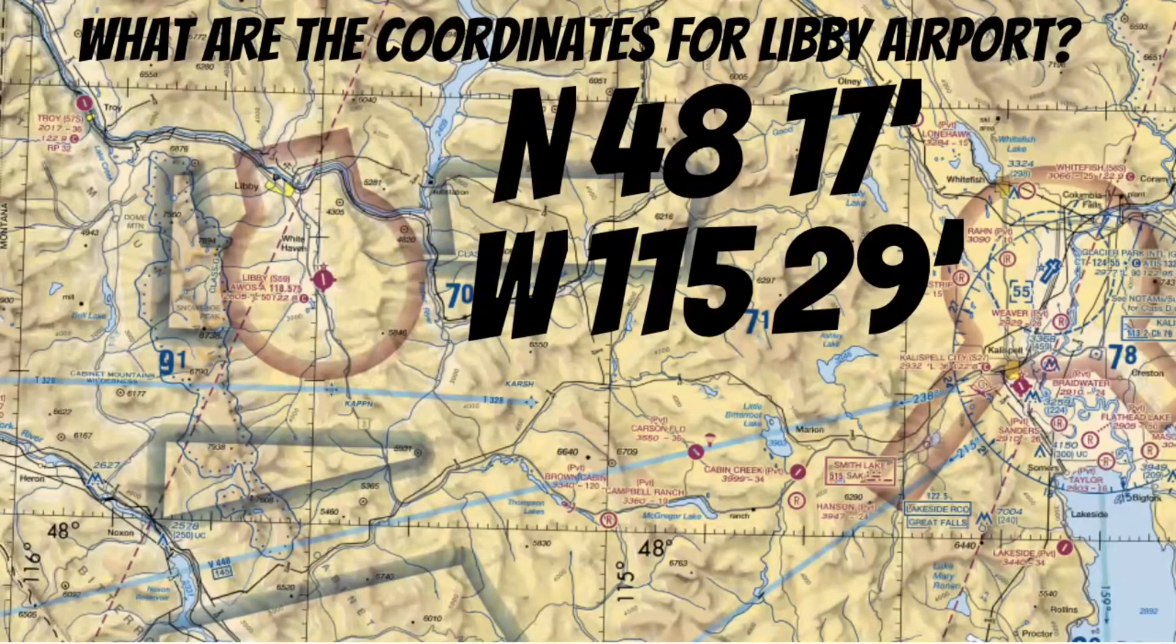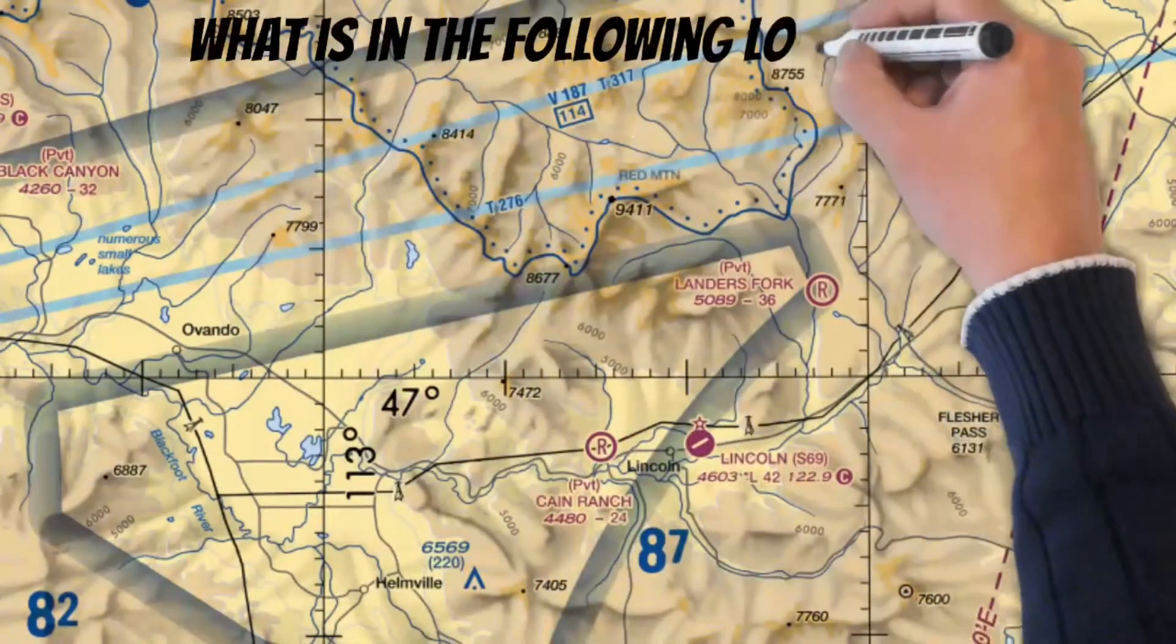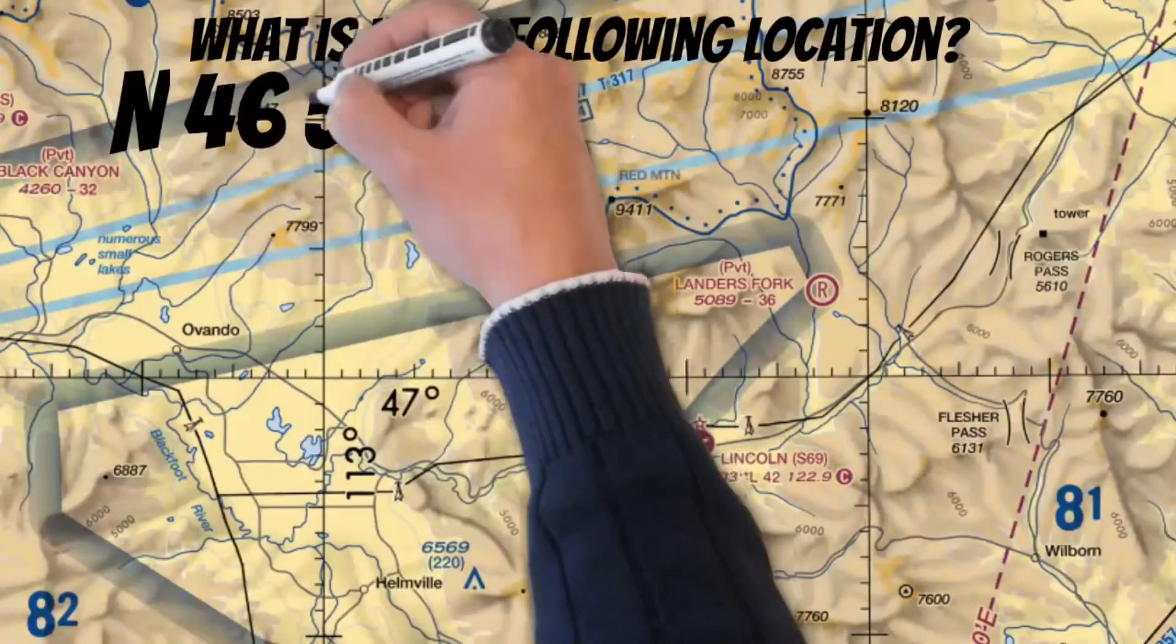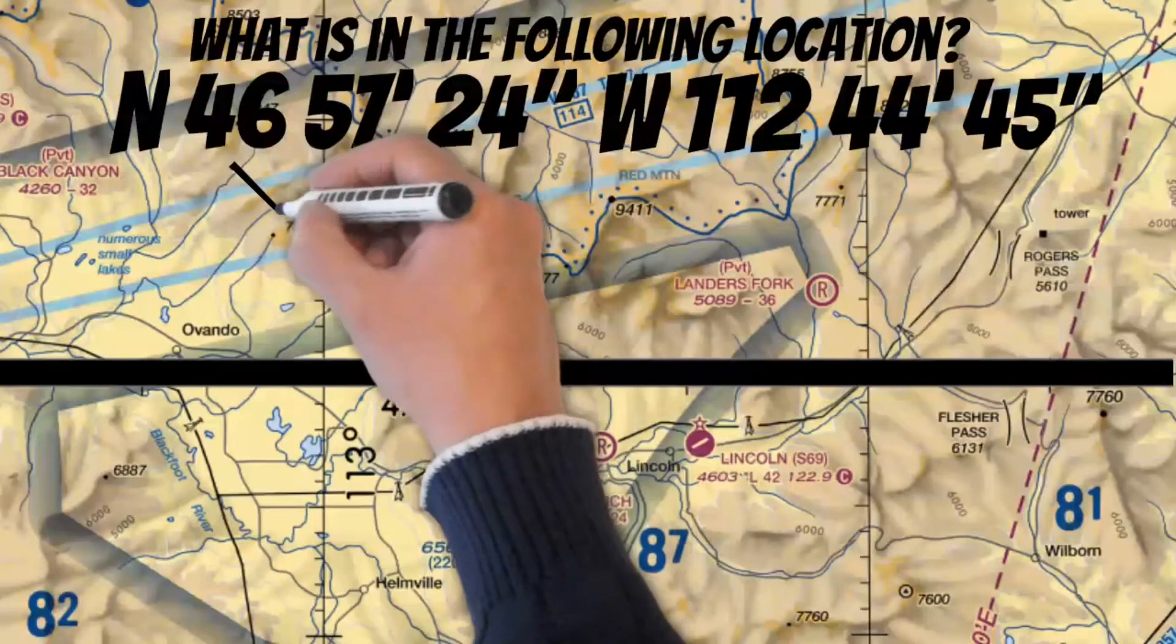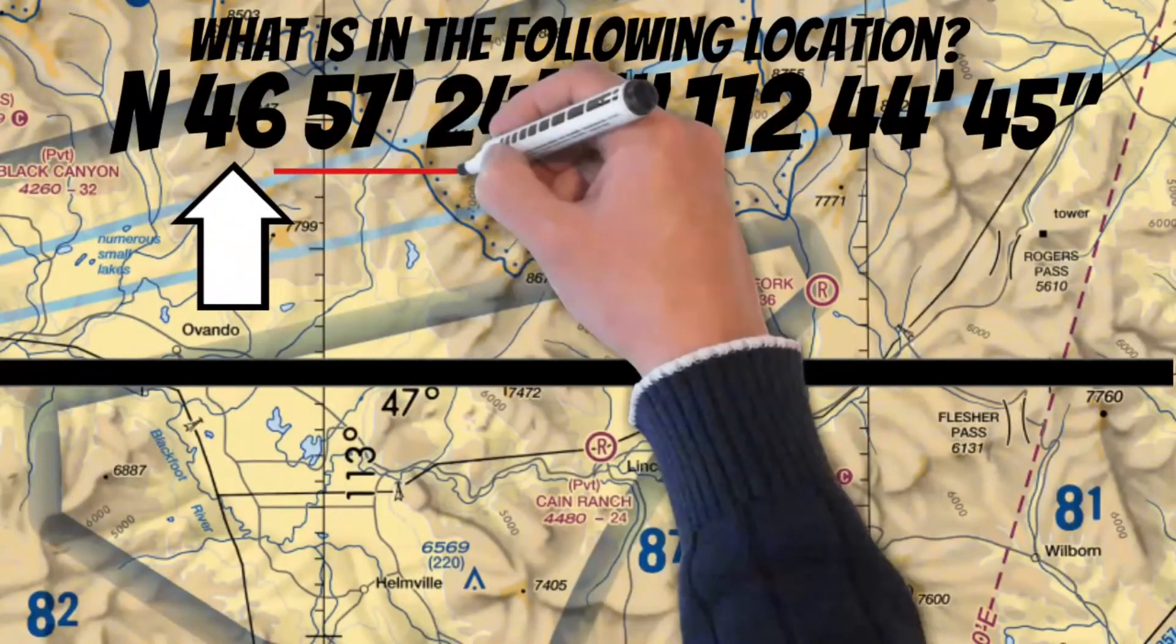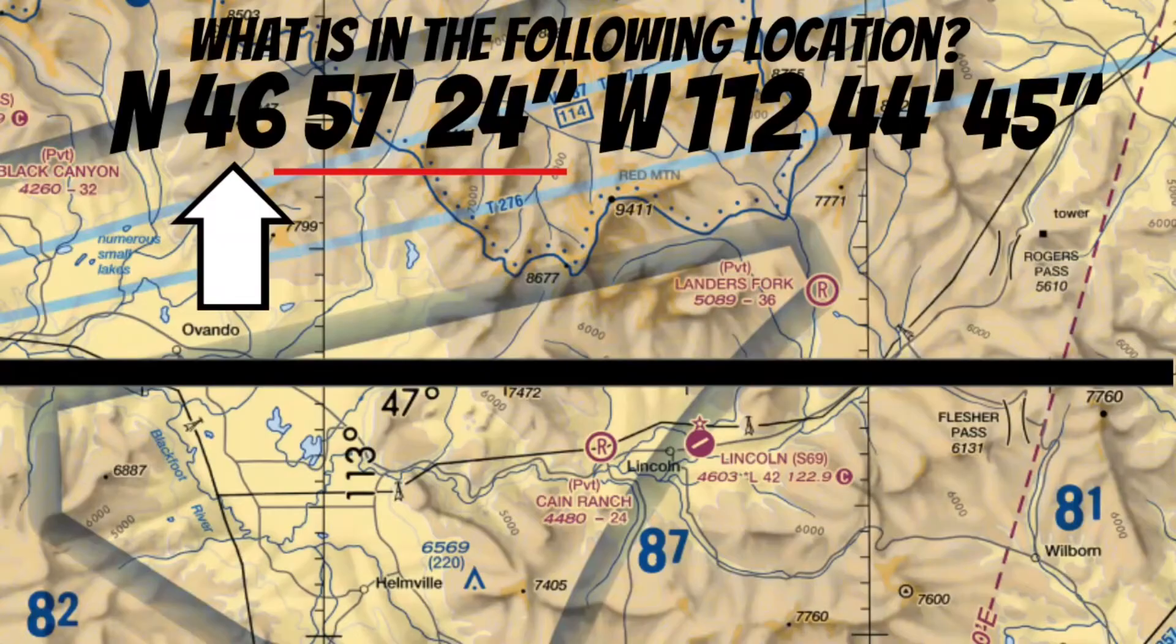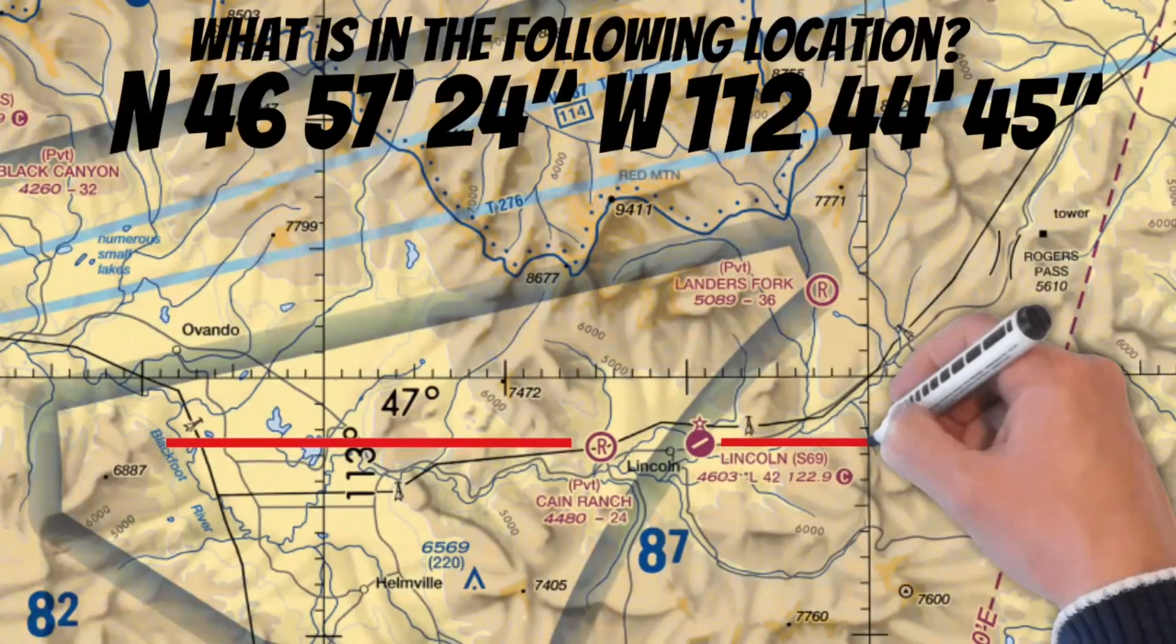Let's look at one more way they may ask you this question: What is in the following location? Well right away when I look at these coordinates I know it's beneath the 47th parallel here. And that's because these coordinates are showing north of the 46th parallel. In fact it looks like we're only two minutes and 36 seconds short of the 47th parallel. Now right away when I'm drawing my line on this map I'm wondering if it's one of these two airports right here. It could even be this town of Lincoln.